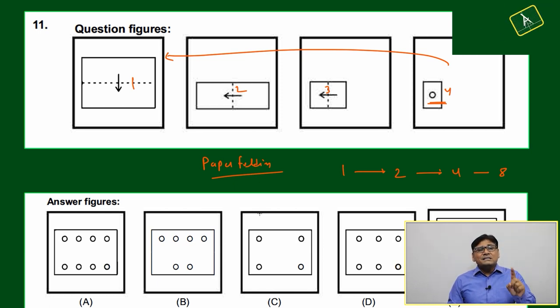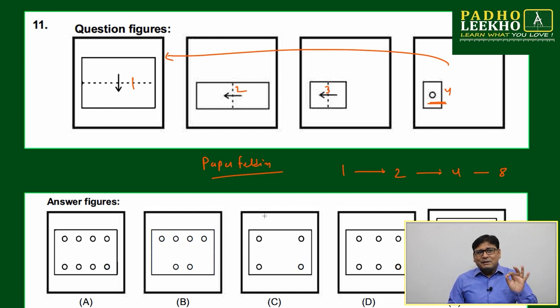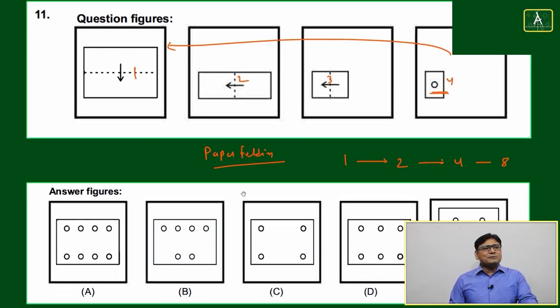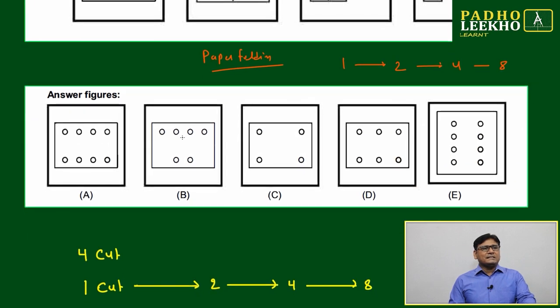You must have eight holes. Just look at the given option choices. Here, how many are there? Six—directly reject. Here, four—rejected. Here, six—rejected. Here, eight, meaning between option A and E only the possible solution.